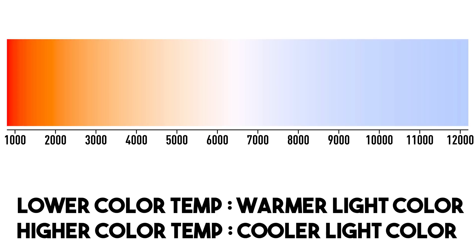For now let's make sure that everybody's on the same page with the basic principles of color temperature. Color temperature is the way that we define the color property of light. The lower the color temperature of light, the more yellow or warmer the color is, and the higher the color temperature of light, the cooler or more blue the light is.